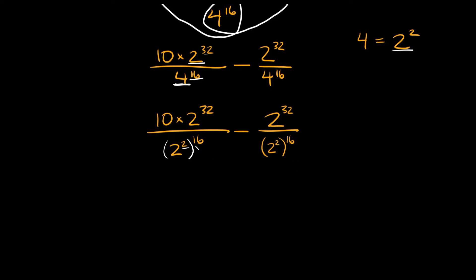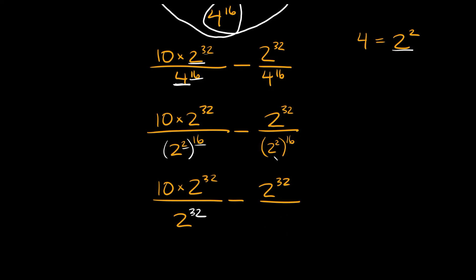How do you simplify a power raised to another power? You just multiply them together. So 2 times 16 equals 32, meaning 2 squared raised to the 16th is really just 2 raised to the 32nd. So now we have 10 times 2 to the 32nd over 2 to the 32nd, minus 2 to the 32nd over 2 to the 32nd.